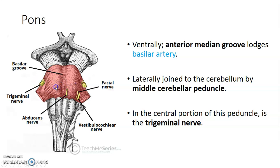The cranial nerves around the pons include the trigeminal nerve, and at the medullopontine junction we have the abducens, facial, and vestibulocochlear nerves. Ventrally, the pons has an anterior median groove that lodges the basilar artery — the basilar groove. Laterally, the pons is joined to the cerebellum by the middle cerebellar peduncle, and in the central portion of this peduncle is the trigeminal nerve.